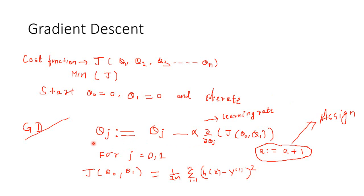We define the algorithm like this: theta j is assigned as theta j minus alpha times the partial derivative of the cost function with respect to theta j. Remember the cost function can take any number of parameters, but let us limit it to two parameters. Let us start with the very first part of the equation — theta j, where j can take values 0 and 1.